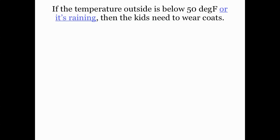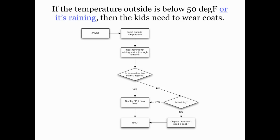Now let's suppose the decision-making process is a little more complicated. Instead, for dressing my kids, I use the criteria: if the temperature outside is below 50 degrees or it's raining, then the kids need to wear coats. This time there are multiple criteria to think about. The graphical algorithm has some of the same elements as before, but now I have two conditions to monitor — namely the temperature and the precipitation. If the temperature is below 50 degrees, I know what to do, but otherwise I have to check the raining status. So we have a chain of if-then contingencies.